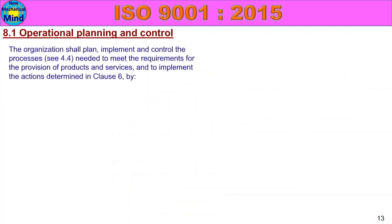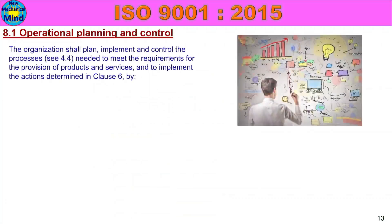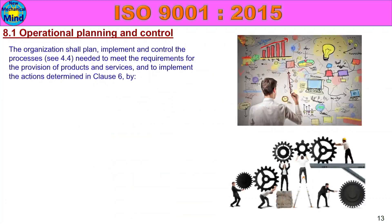First, 8.1 Operational Planning and Control. The organization shall plan, implement and control the processes needed to meet the requirements for the provision of products and services and to implement the actions determined in Class 6. One company produces products or services, and the customer must meet the requirements for the process — plan, implement and control.